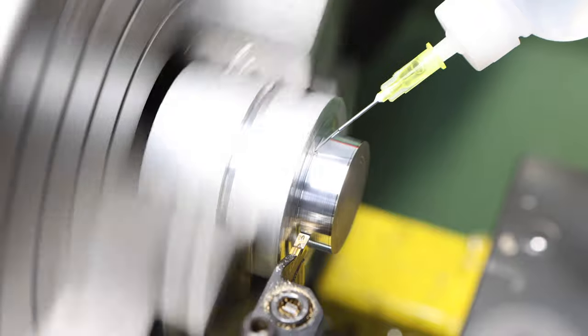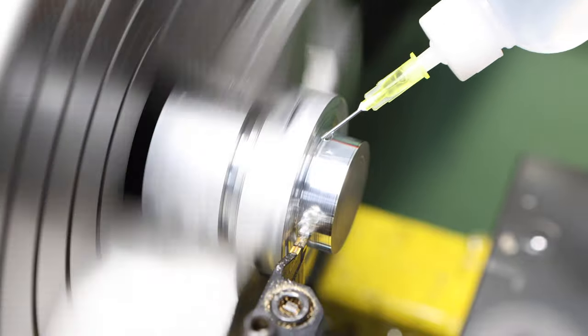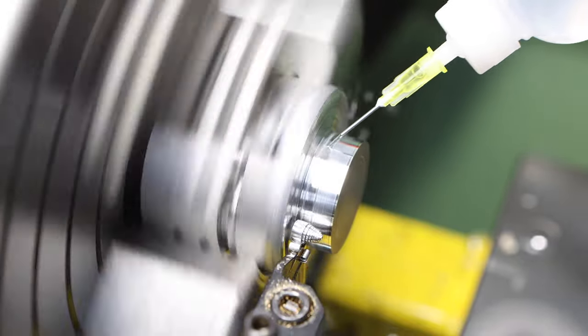I've brought that coin to size now and we need to part it off from the slug so I'm just using some isopropyl alcohol here to lubricate the cut.